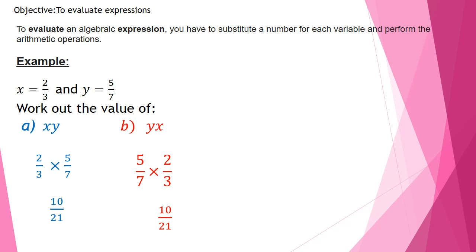I get the same answer because, as you know, in multiplication, if you say x times y or y times x, you are going to get the same answer, which is the commutative property. Part C, x squared.